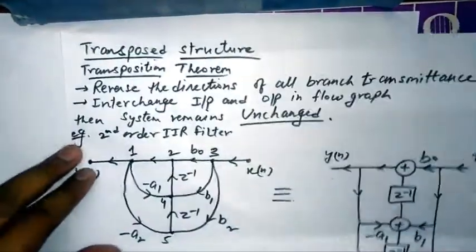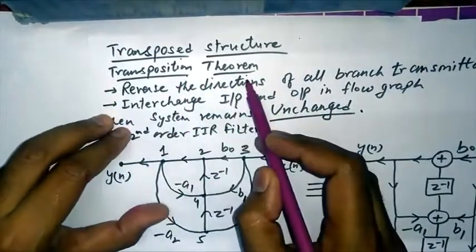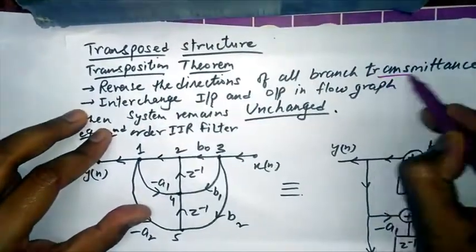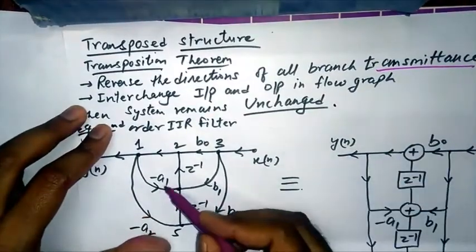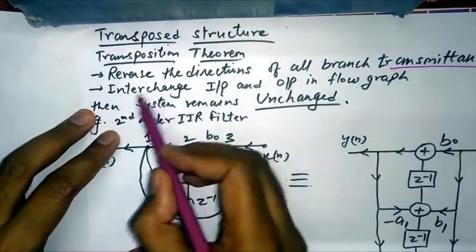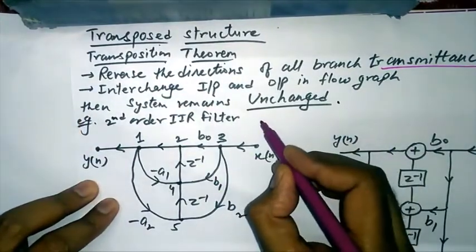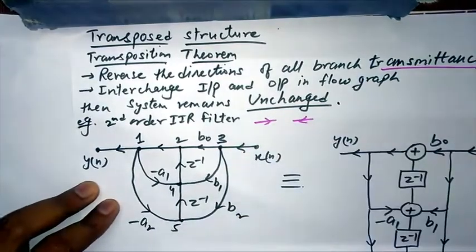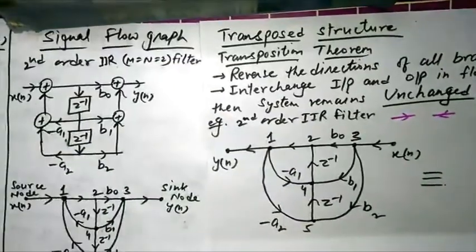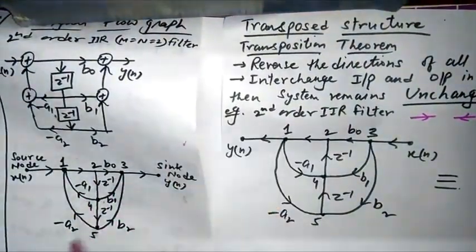The next topic is the transpose structure, based on the transposition theorem. This involves reversing the direction of all branch transmittances — the weight multipliers such as a1, a2, and so on — and interchanging the input and output of the flow graph. So every arrow direction is reversed.